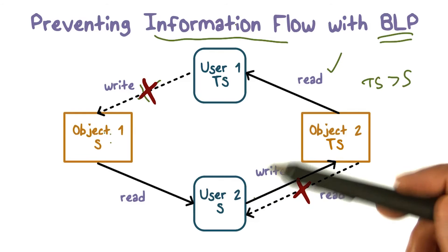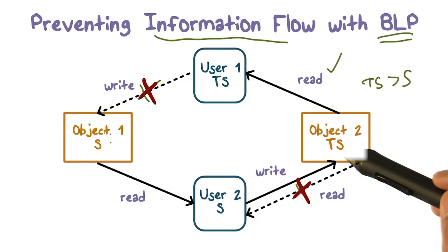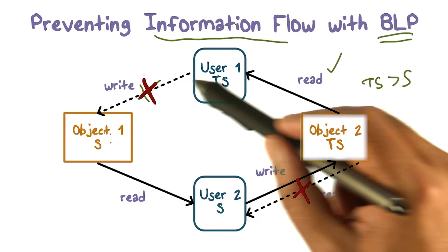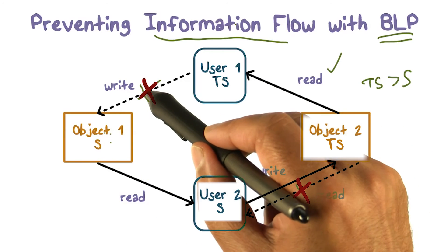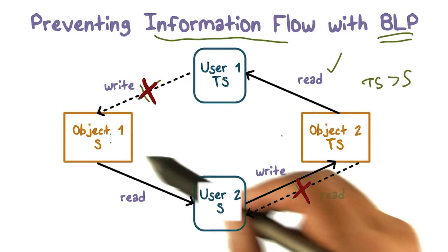So this path we said is not possible. This path actually ends right here because the secret user is not able to read a top secret document. Because this label would not dominate the label of the object. So this path is broken here, this path is broken right here. So this information actually never flows in here.